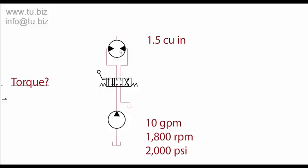So the formula is 2,000 psi times the displacement of the motor in cubic inches—1.5—divided by 6.28. That will give us the torque in inch-pounds.